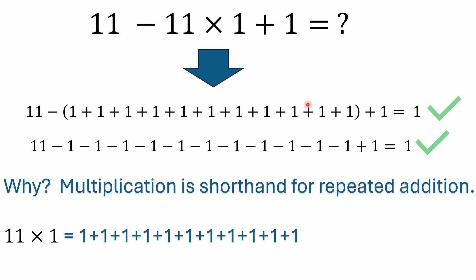Don't be confused by the parentheses — please don't comment asking why I added parentheses when there weren't any in the original problem. The parentheses I've added here don't change anything. It's the same thing as saying 11 minus 1 minus 1 minus 1... all the way out, and then you have the plus 1 at the end from the original problem. That still equals 1. I was just replacing the 11 times 1, and the minus sign out front affects everything inside the parentheses — it's no different.